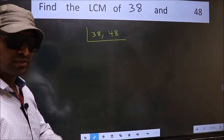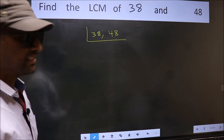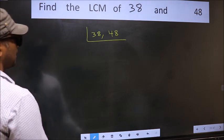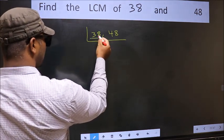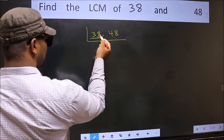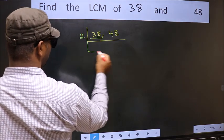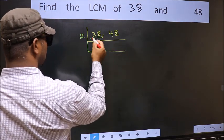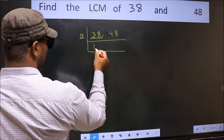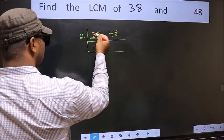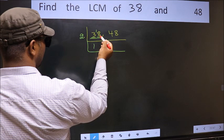Now focus on the first number, which is 38. For this number, the last digit is 8, so take 2. The first digit is 3; the closest number to 3 in the 2 table is 2. So 3 minus 2 is 1, carried forward — giving us 18.